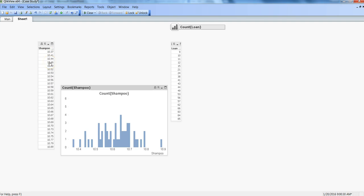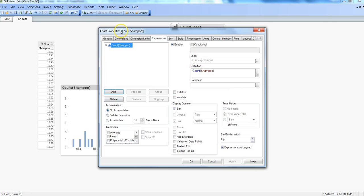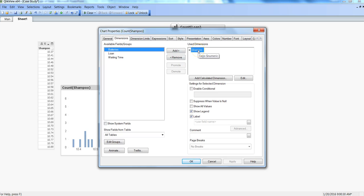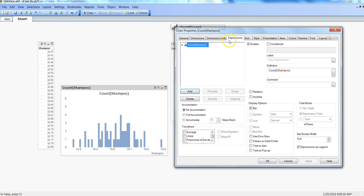So what you need to do in this kind of data: now in this case I don't have any dimension or anything, so how I have configured it is just right-click on this bar chart, go to properties, and within the dimension I have just given the shampoo dimension, which is again a number, so it is kind of a histogram if you think.